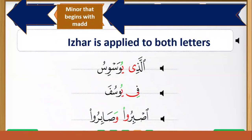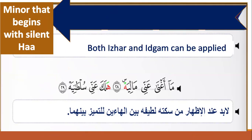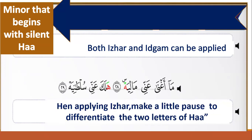For minor identity that begins with silent ha, like ما أغنى عني مالية and هلك عني سلطانية, both idgham and izhhar can be applied. When applying idgham, make a little pause to differentiate the two letters of ha — مالية, هلكا.